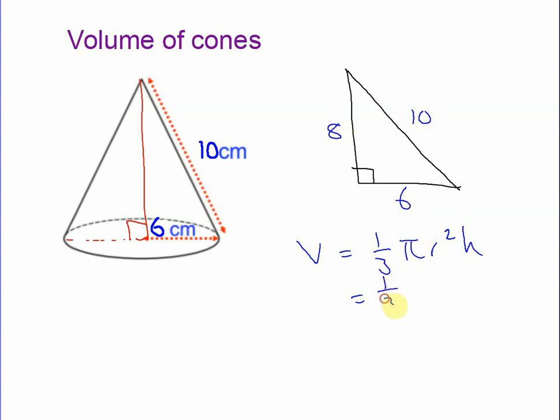So it's one-third times pi times the radius squared, 6 squared is 36, times the height, which is 8. One-third of 36 is 12. 12 times 8 is 96. So this is 96 pi centimeters cubed.